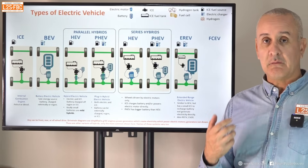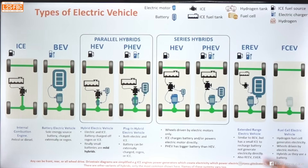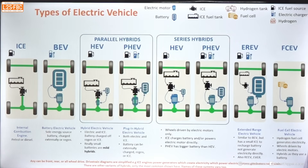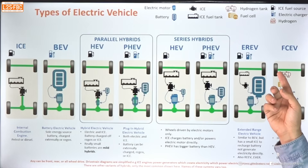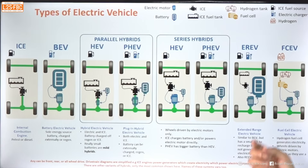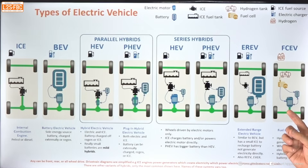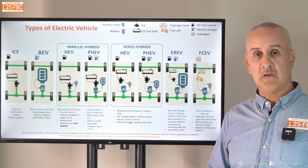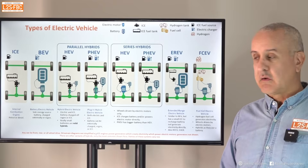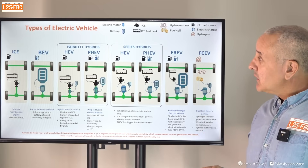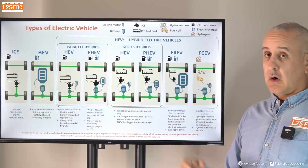Finally, the FCEV — fuel cell electric vehicle. It also uses an electric motor, but instead of a conventional battery as the primary energy source, it has a fuel cell system and a hydrogen tank. The hydrogen system generates electricity, which can power the electric motor directly or recharge a small battery. That battery is relatively small because it's mainly used for regenerative braking — harvesting energy when the vehicle slows down.